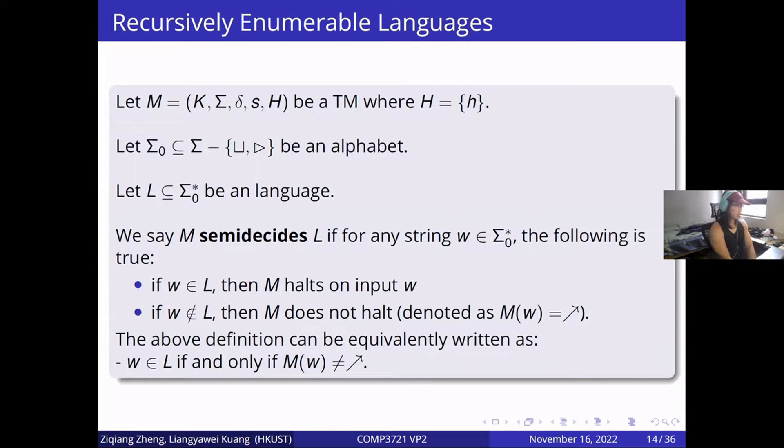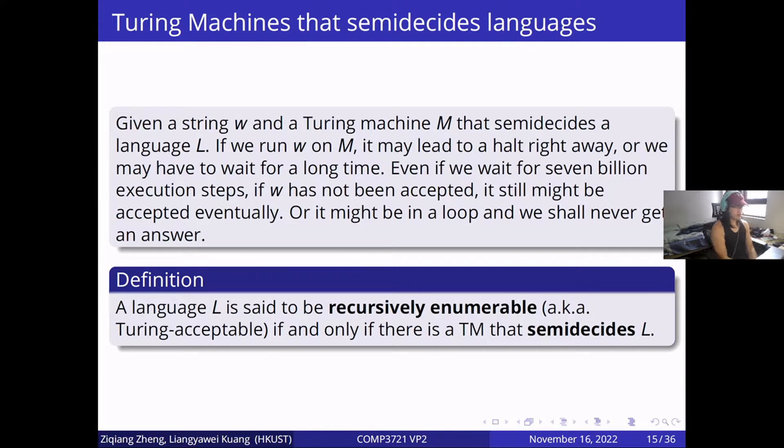For recursively enumerable languages, it's more about whether a Turing machine semi-decides a language. We say a language is recursively enumerable if and only if there is a Turing machine that semi-decides it. Recursively enumerable is also known as Turing acceptable.